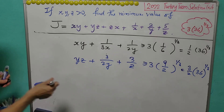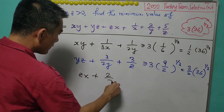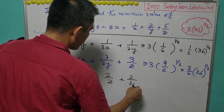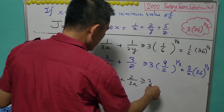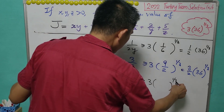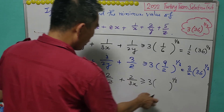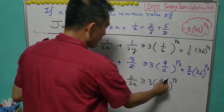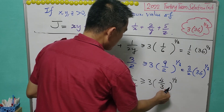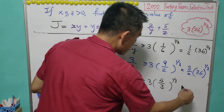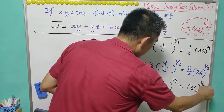Last but not least, we consider ZX plus 2 over Z plus 2 over 3X. Again using AM-GM inequality, this is greater than or equal to 3 times the product to the power of 1 over 3. Z cancels, X cancels, leaving 4 over 3. To get 36 times 9 times 9, that is 27 to the power of 1 over 3, which equals 3. So this equals 1 times 36 to the power of 1 over 3.